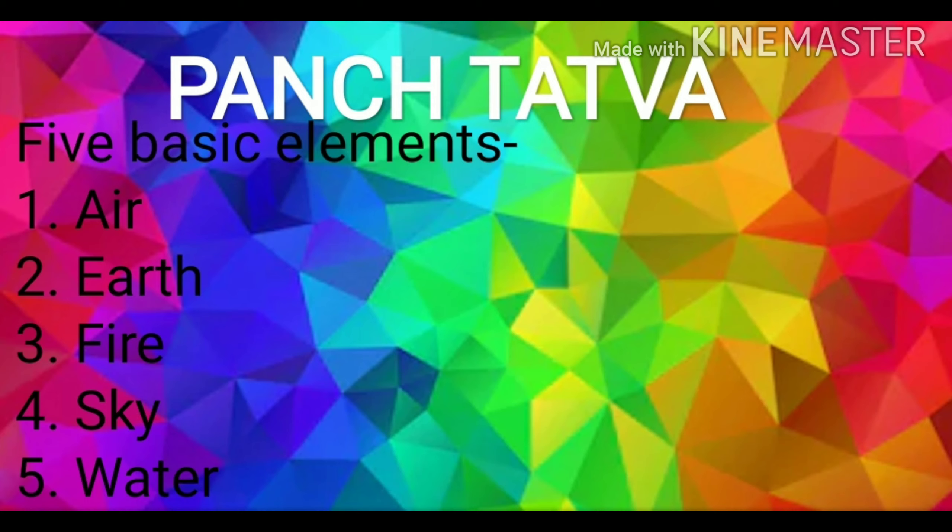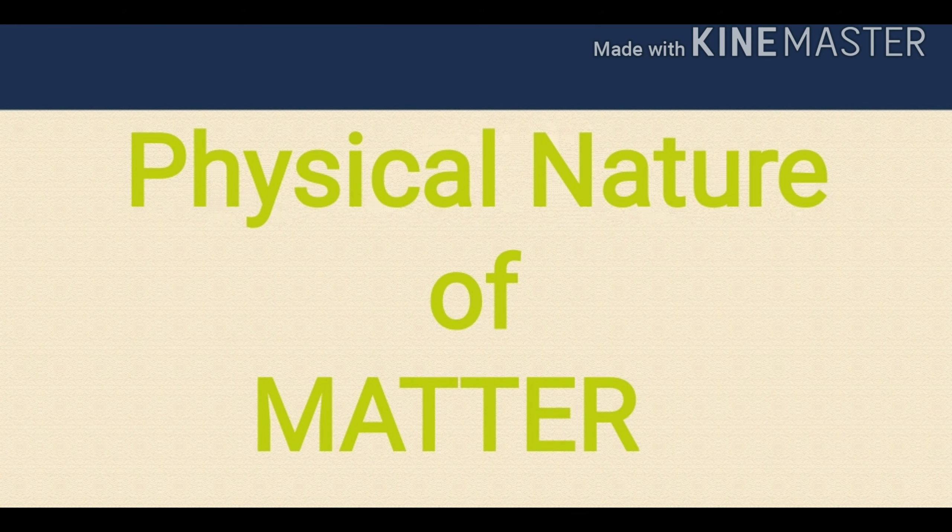Ancient Greek philosophers had arrived at the same classification of matter. Modern day scientists have evolved two types of classification of matter based on their physical properties and chemical nature. In this chapter, we shall learn about matter based on its physical properties. So now, we will discuss physical nature of matter.